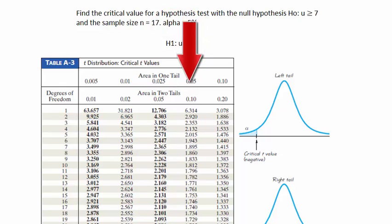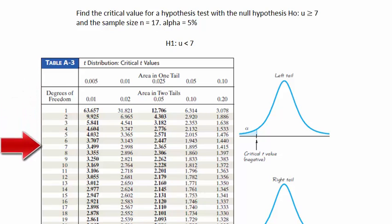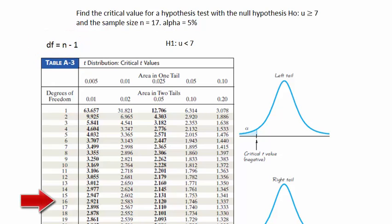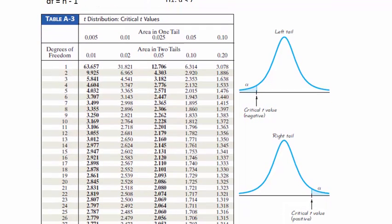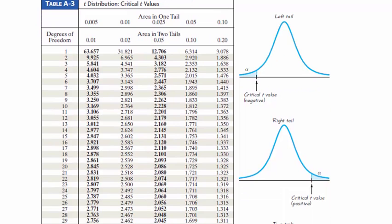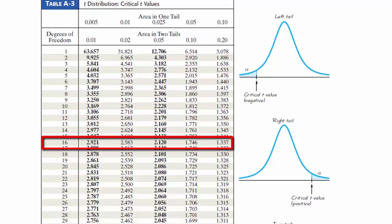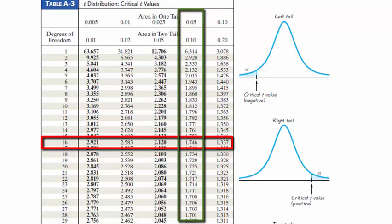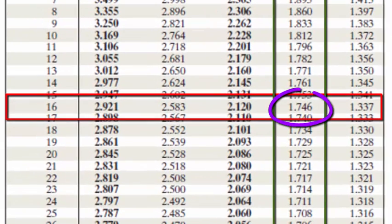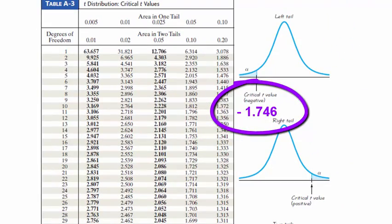Since alpha is 5%, the area in one tail will be 5%, and we'll be using the second column from the right for this question. Next, we need to decide which row under the degrees of freedom heading we'll be using. The degrees of freedom is equal to n minus 1, so in this case the degrees of freedom will be 16. We scroll down the t-table to the row for 16 degrees of freedom, and down the column labeled area in one tail 5%, and we come to the value 1.746. However, since this is a left-tail test, our answer will be negative 1.746.